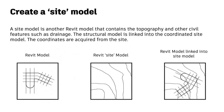A site model is simply another Revit model that can contain one or more Revit models and other civil features such as drainage and topography. The structural model is linked into the coordinated site model and the coordinates are acquired and saved into your model. A link has now been established between the two Revit models.